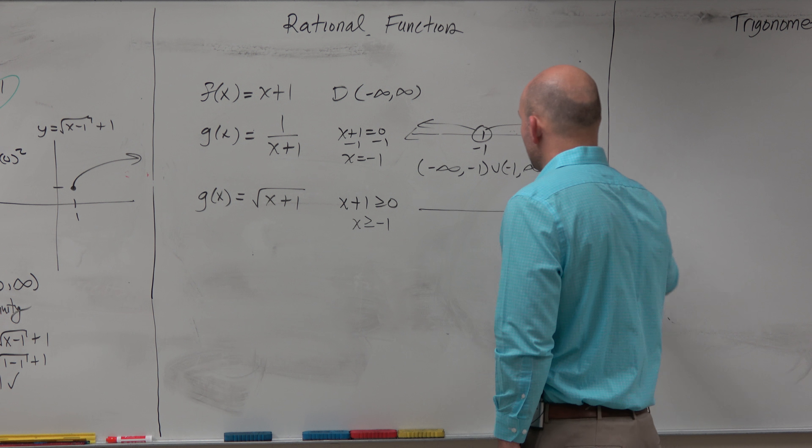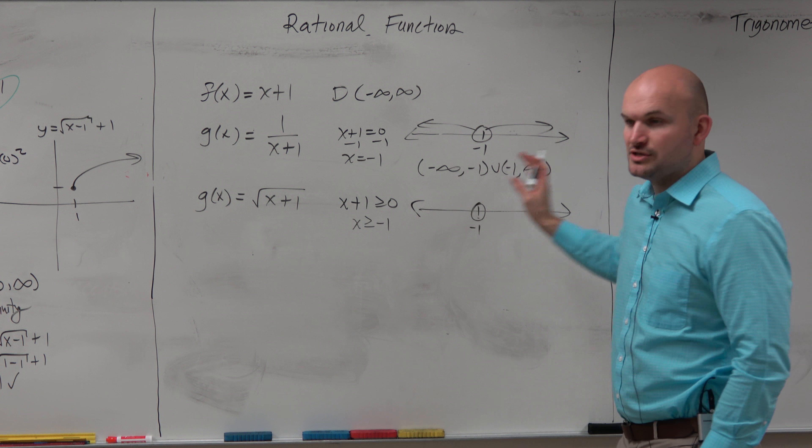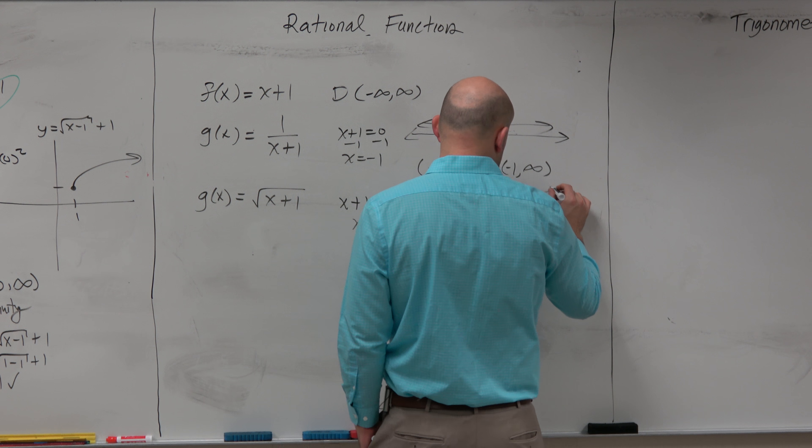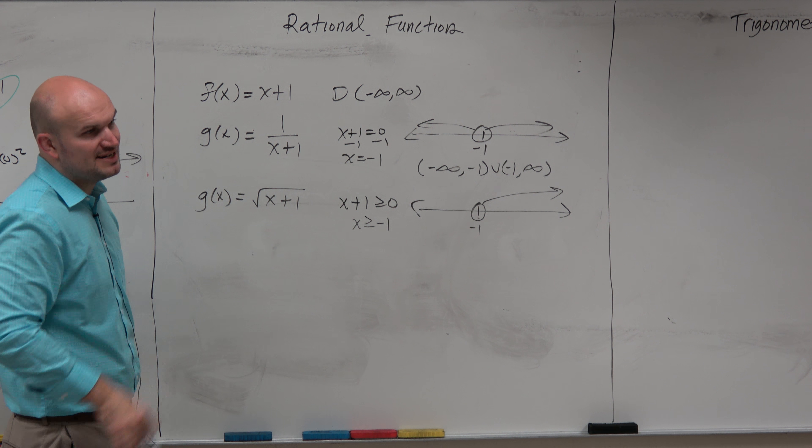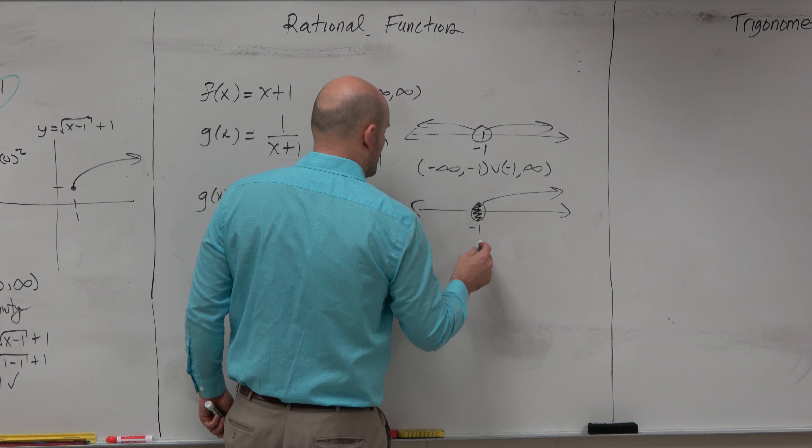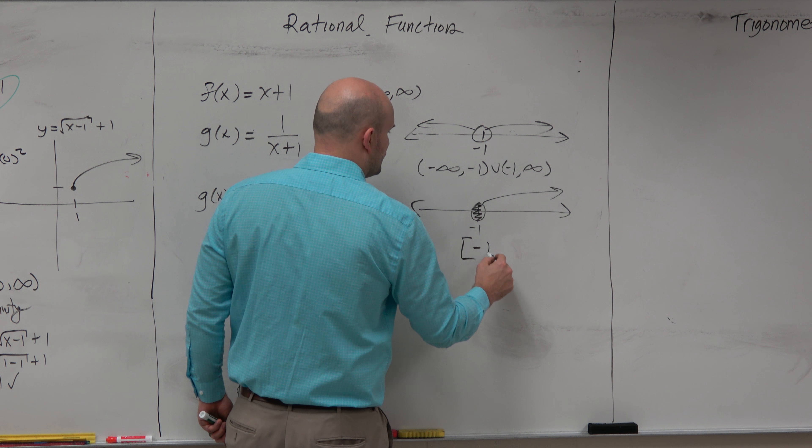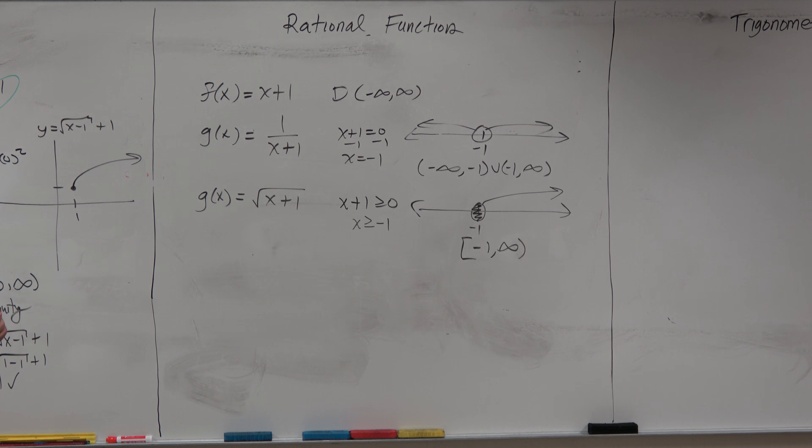So then you'd say x is greater than equal to negative 1. And then if you were to draw that on a number line, you'd say here's negative 1. All numbers that are greater than negative 1 are to the right. And it would look like this. Oh, I'm sorry. However, it's negative 1. Can we have negative 1? Yeah, we talked about that, right? So that's included. So the domain in this case is negative 1 to infinity.